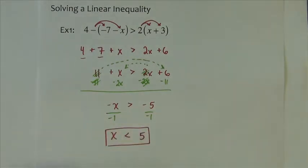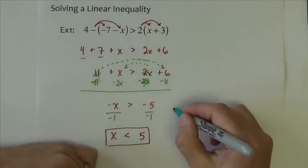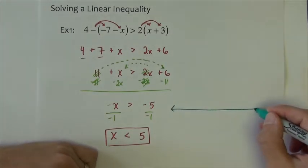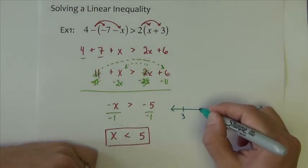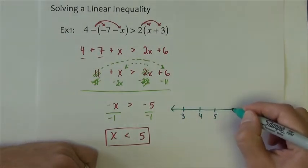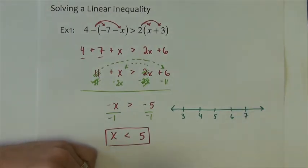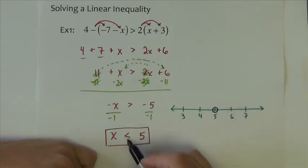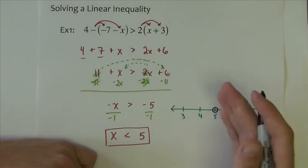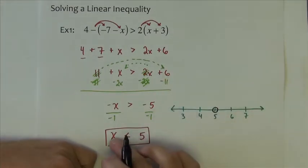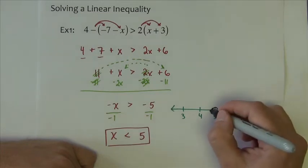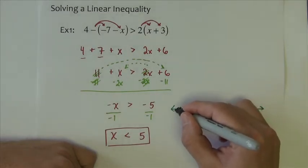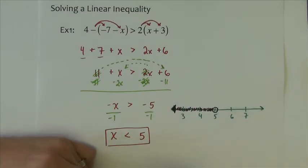Now what I'd like to do is show this also on a number line. So let's see what we've got. Let's just go with 3, 4, 5, 6. That's good enough. I want to show all of the numbers that are less than 5. So I go to 5, I'm going to put a circle. Because it's just simply less than, we use an open circle. And which side of 5 are the numbers smaller than 5? The side of 5 is the left side. So there's our number line.